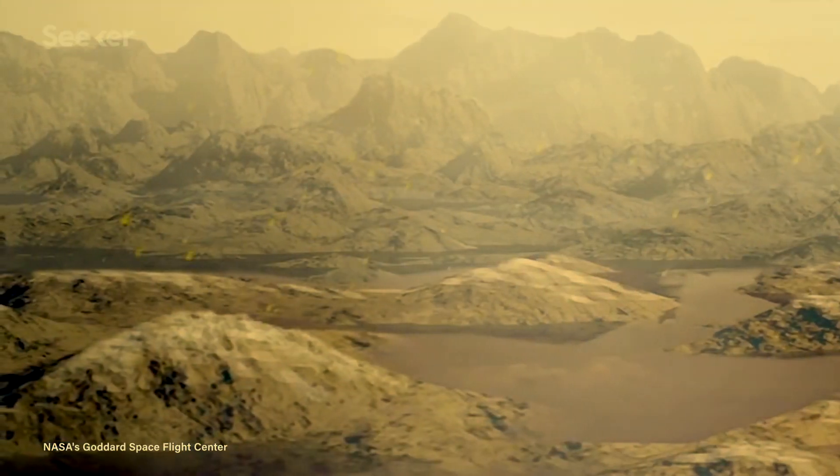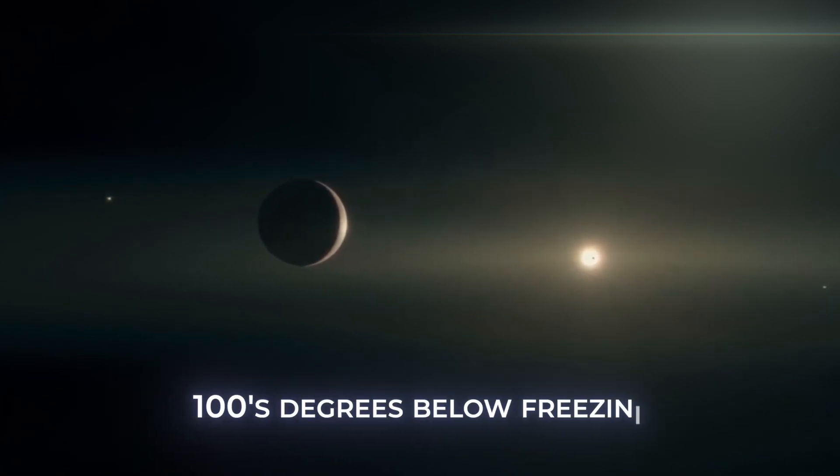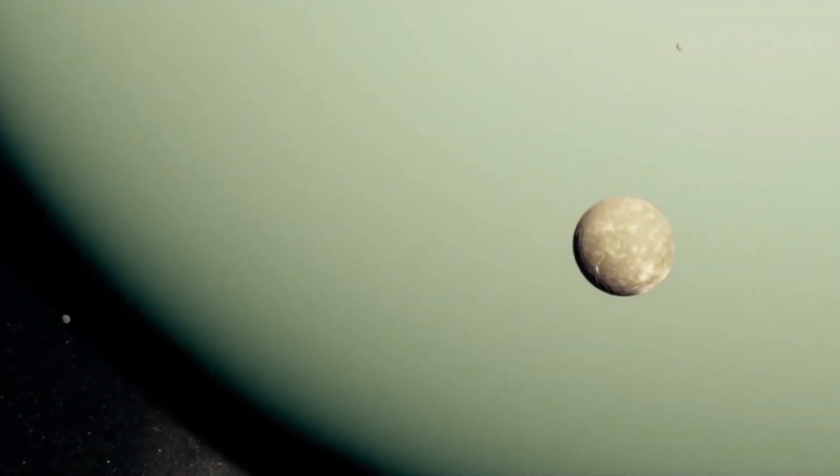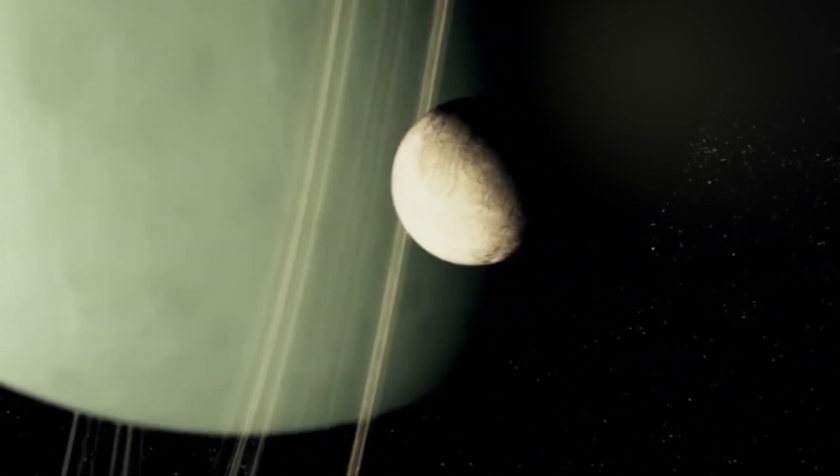Titan is far from the sun, so the temperature there is hundreds of degrees below freezing. These frigid temperatures and high atmospheric pressures mean that methane, which exists as a gas on Earth, exists as a liquid on the surface of Titan.